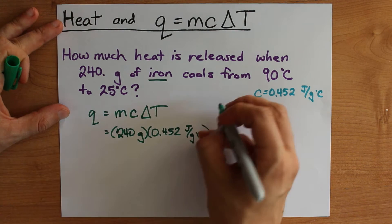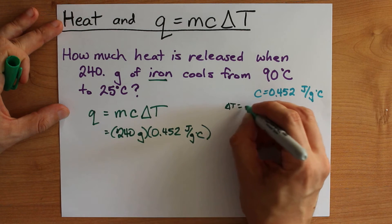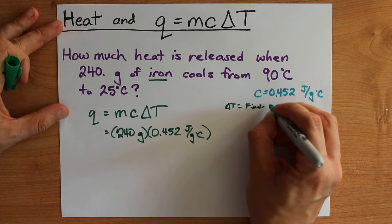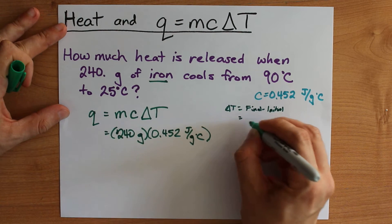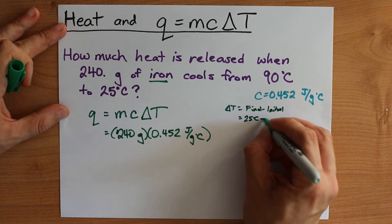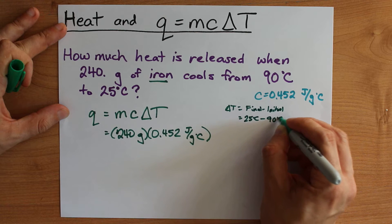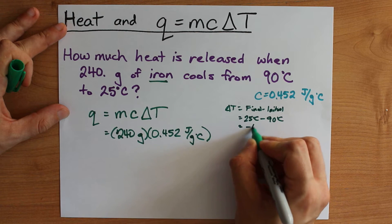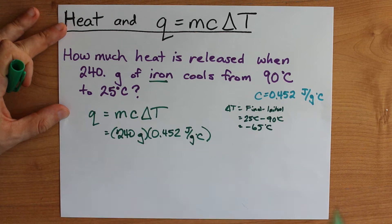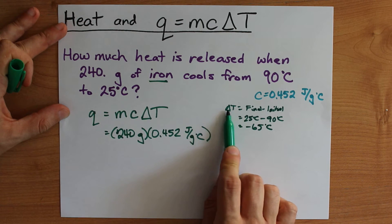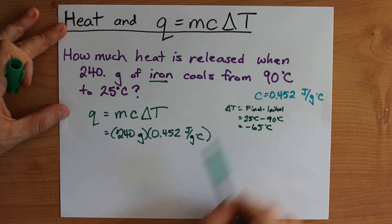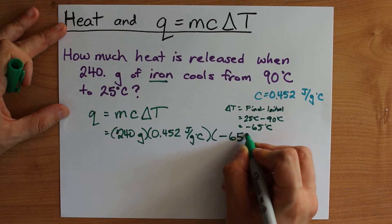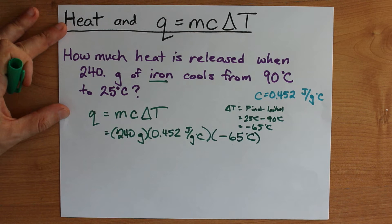Now delta t is a little tougher. Delta t is equal to the final temperature minus the initial temperature, which in this case is 25 degrees Celsius and we're going to subtract 90 degrees Celsius. That gives me negative 65 degrees Celsius and delta t is negative because the temperature went down from 90 to 25. So I'm going to plug negative 65 degrees Celsius in here.